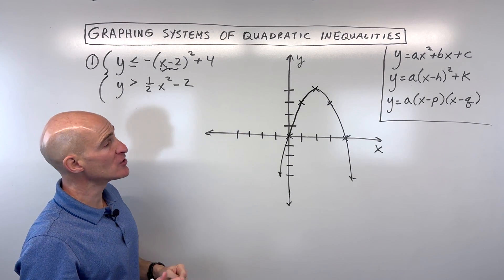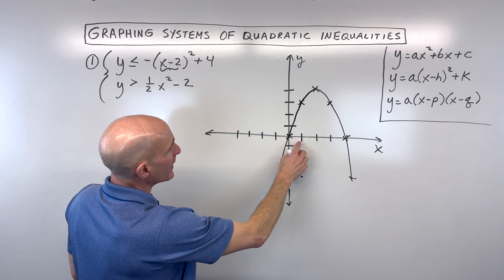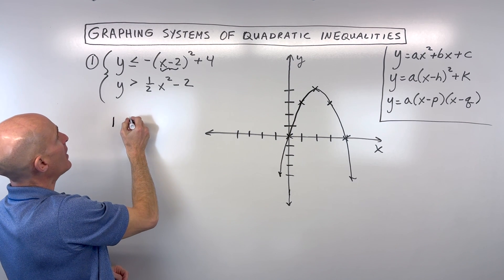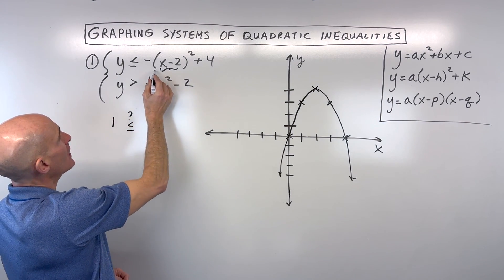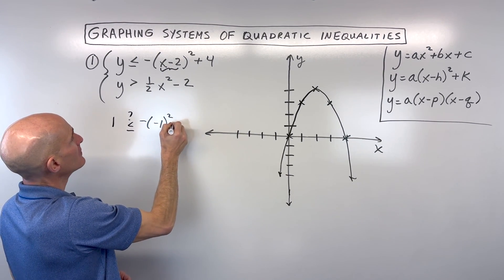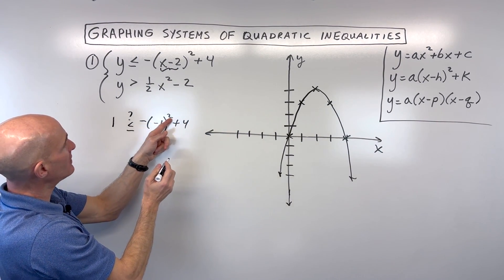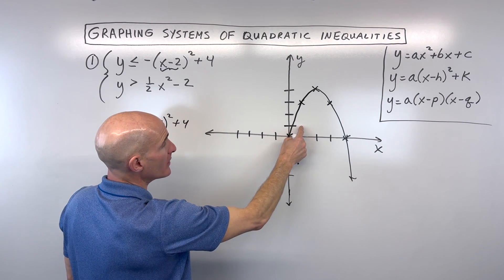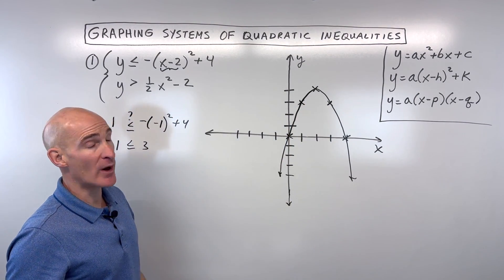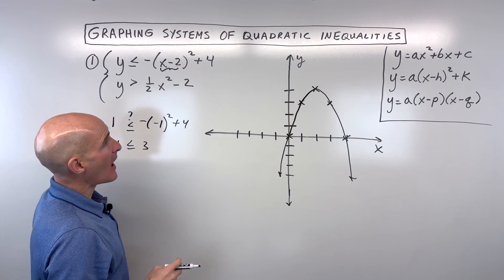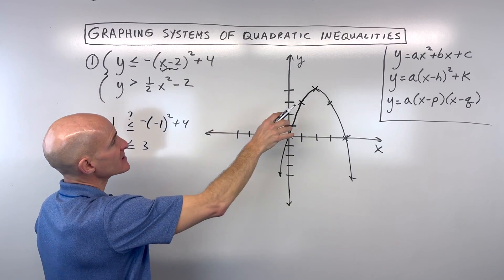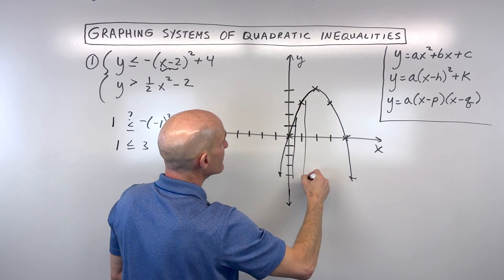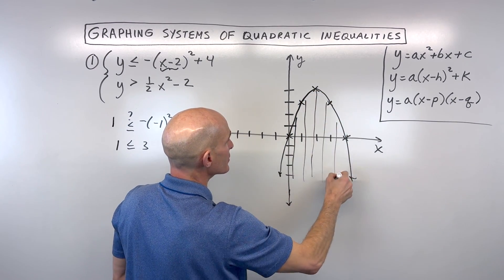Some students don't like that method — they like to use the test point method. You could pick a point, say the point (1, 1). If I plug one in for x and one in for y: negative one minus two is going to be negative one, negative one squared is one, plus four is three. So is one less than or equal to three? Yes, that's true. Since that test point (1, 1) was true, that's the side of the graph that we want to shade. If it's false, we would shade on the other side. So for here, you can see we're going to be shading on that part of the graph.